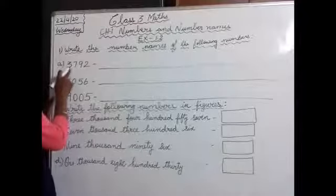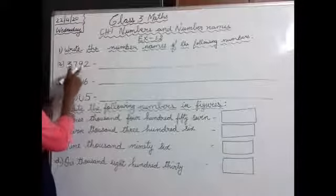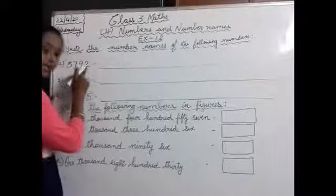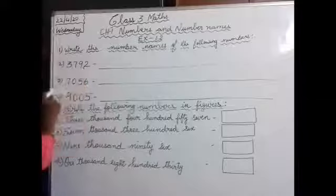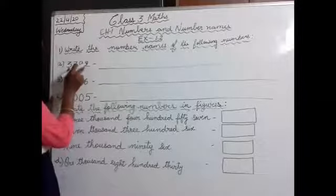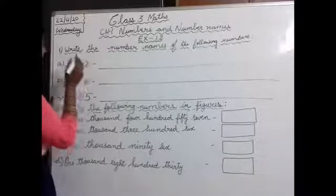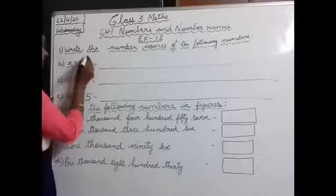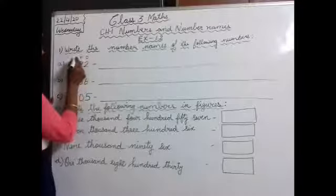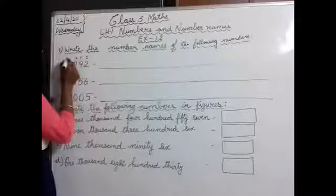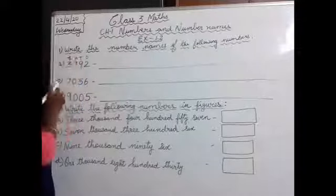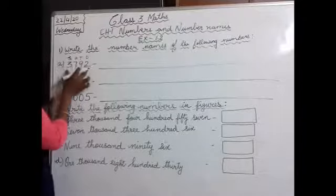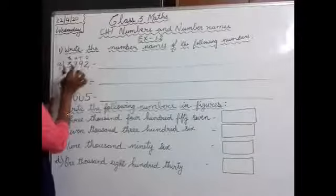Part A: 3792. You have to write the number name for this number. First you have to start with ones, tens, hundreds, and thousands. Now it will be very easy to write.